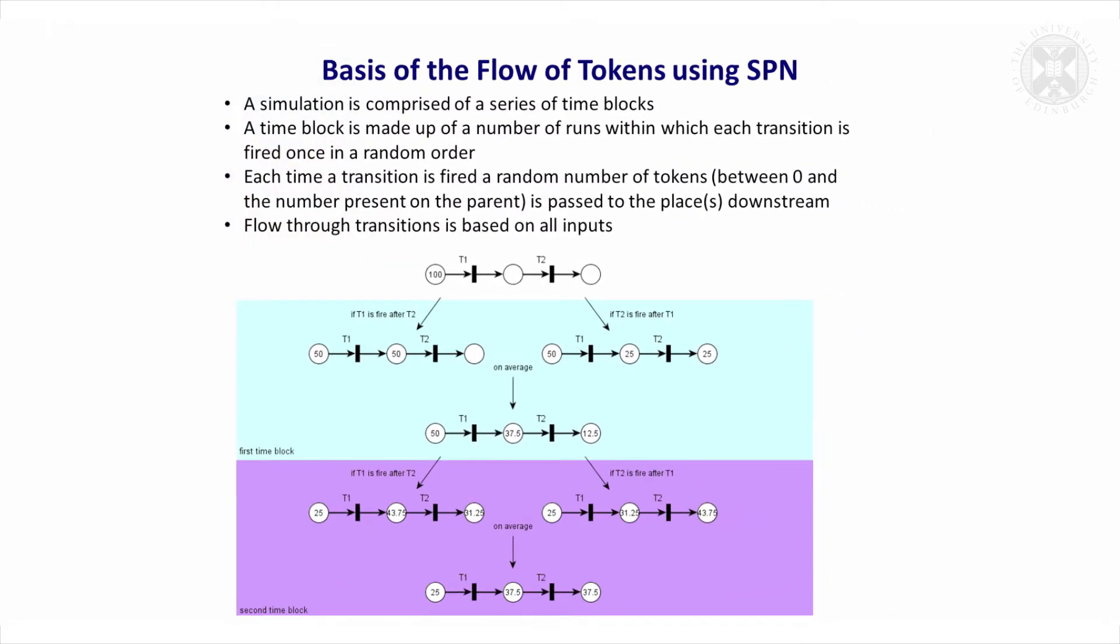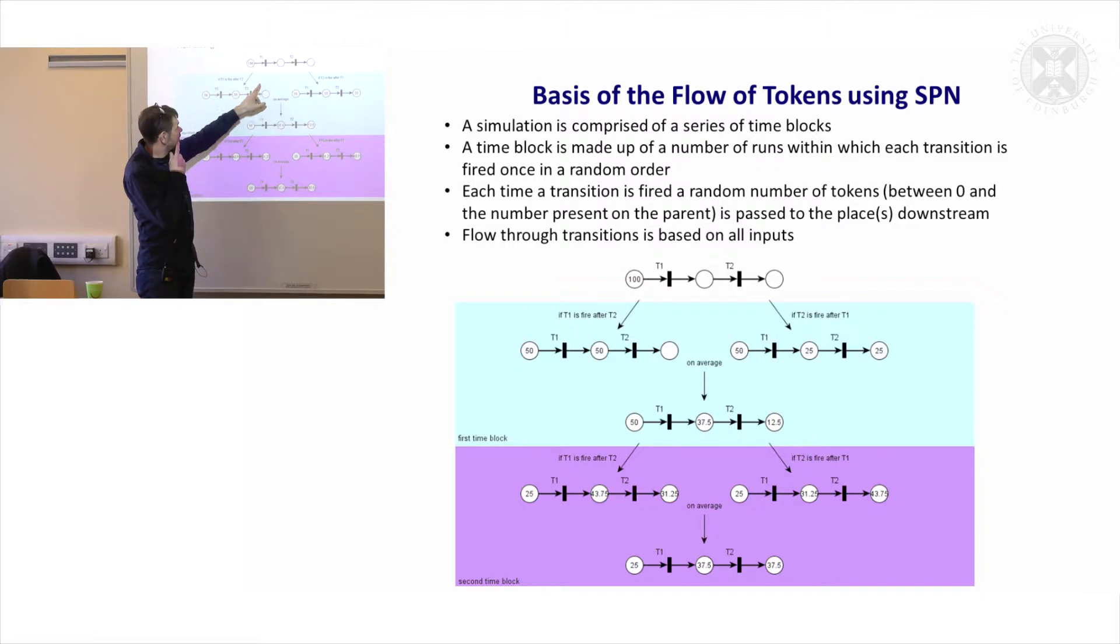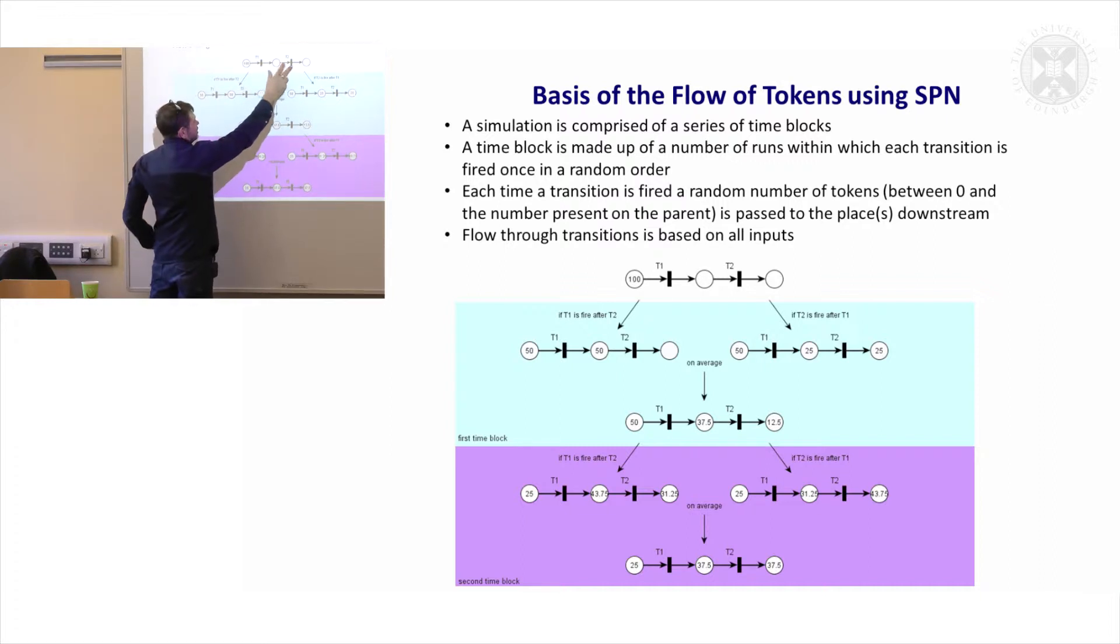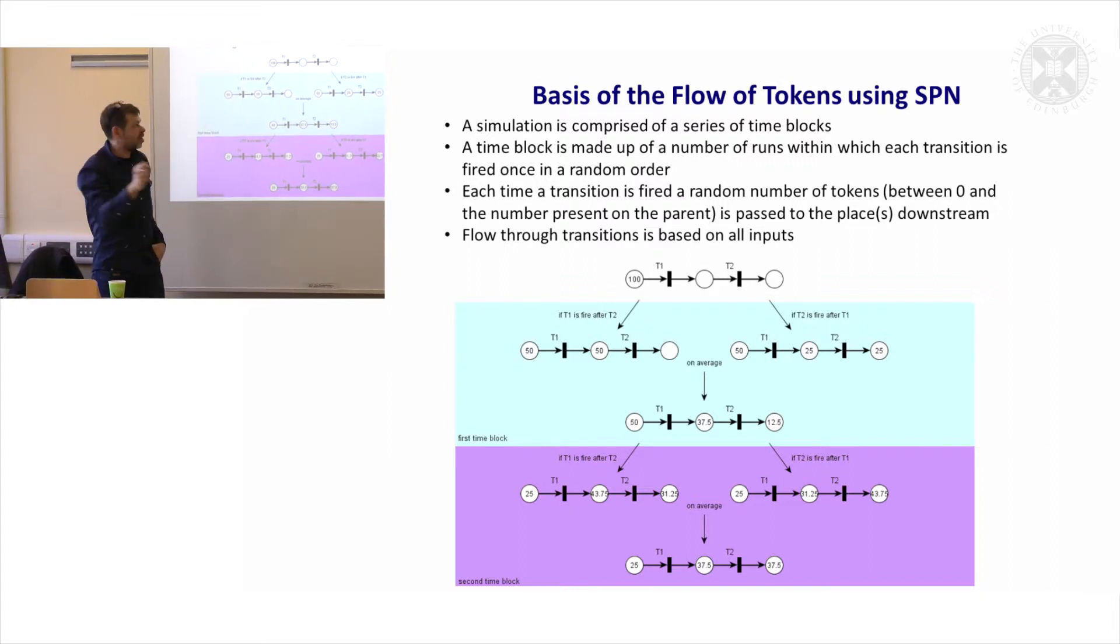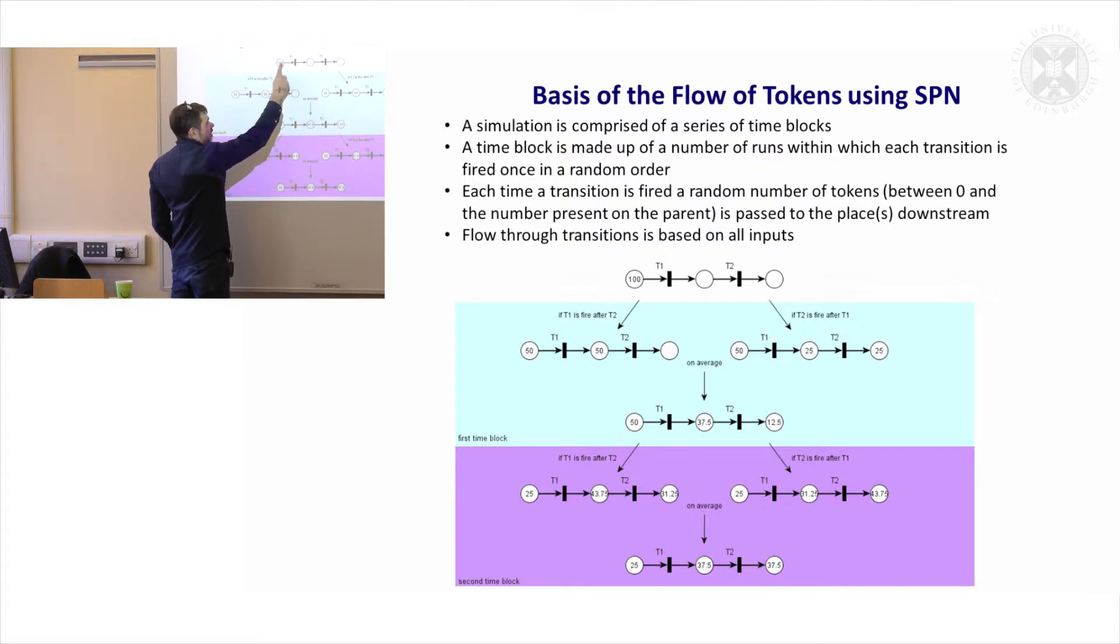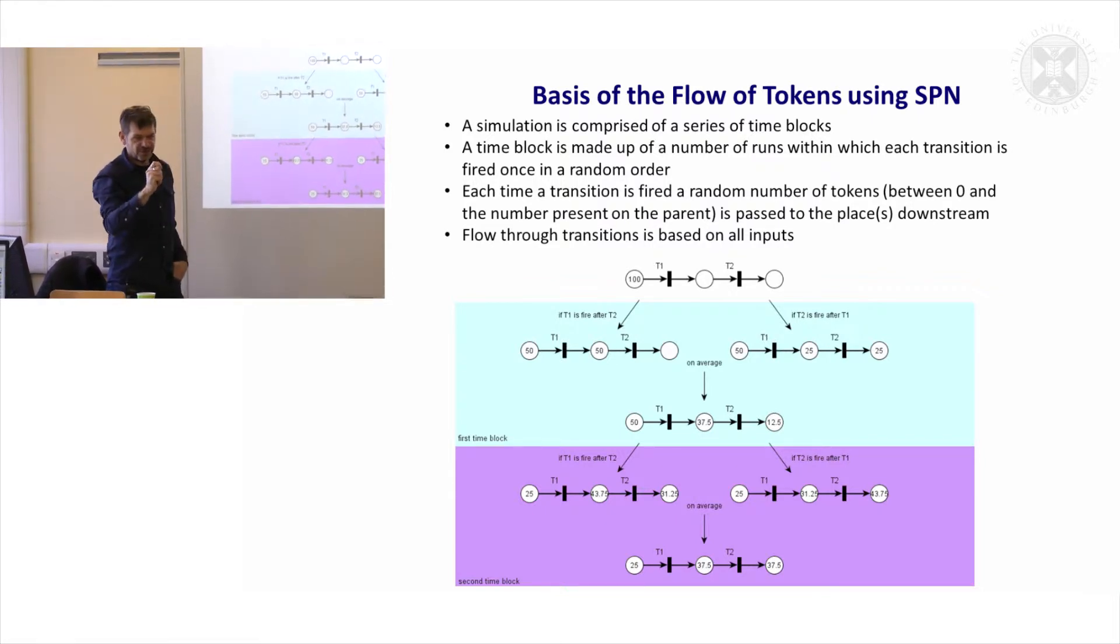I just want to spend one moment trying to show a little bit more about the logic behind what we're doing. I'm not really expecting you to get this, but I just want to at least attempt to explain it. So imagine we have a network of three nodes and two transitions. We have 100 tokens here. And what we're going to do is we're going to fire these transitions. When we fire a transition, what happens? So we fire this T1, then these tokens are going to move from there to there.